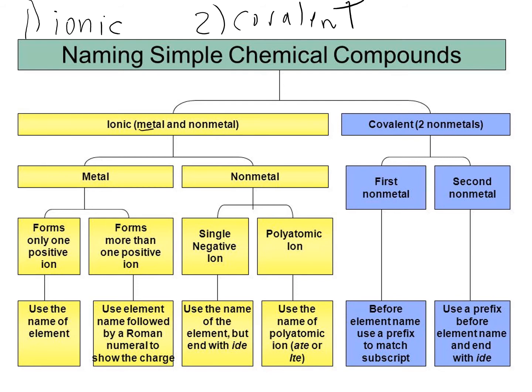Ionic, as a review, is between metals and non-metals. Covalent is between two non-metals. For example, sodium chloride is a metal and a non-metal, so it's ionic — you would follow the set of rules in yellow.